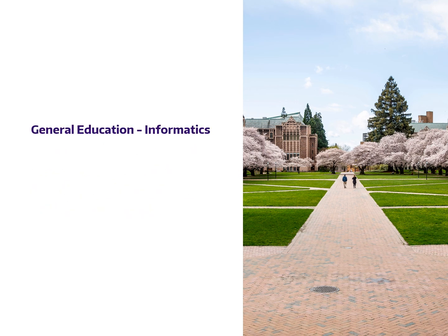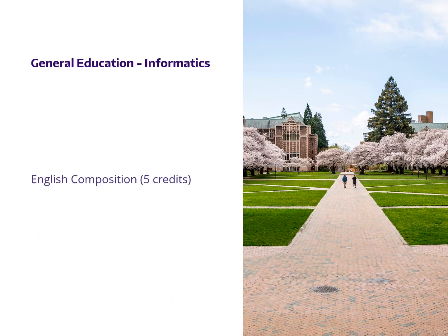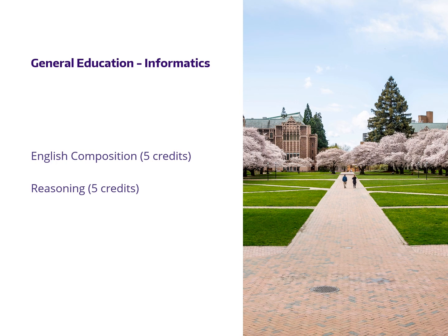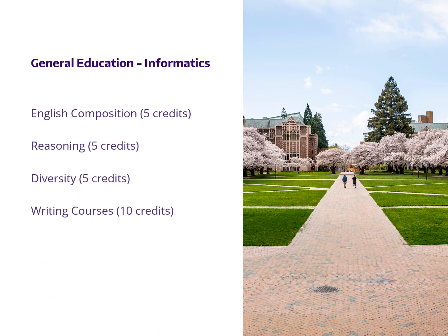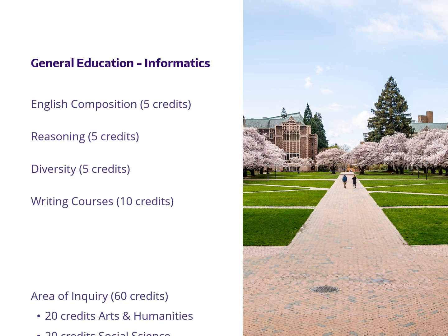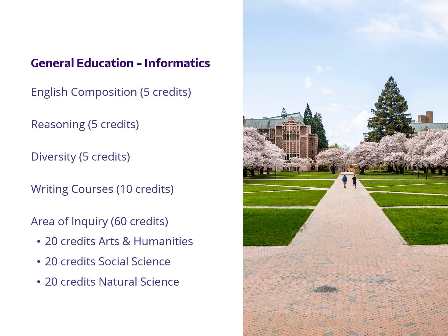The general education requirements for informatics are similar to those of other UW programs, and they consist of five credits of English Composition, five credits of Reasoning, five credits related to Diversity, ten credits related to Writing, and twenty credits each of Arts and Humanities, Social Sciences, and Natural Sciences. Transfer credits, courses taken from other colleges, and extension credits such as AP and IB credit, will usually apply to these general education requirements.